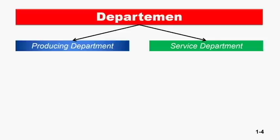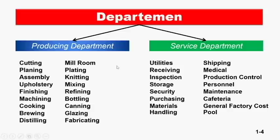Secara prinsip, dalam sebuah pabrik yang dibagi segmen-segmen dalam bentuk departemen, secara umum ada dua jenis: yaitu producing department (departemen produksi). Departemen ini adalah departemen yang melakukan aktivitas pabrikasi, pengolahan bahan baku hingga menjadi barang jadi. Contoh nama-nama producing department antara lain: cutting (pemotongan), planning (perataan/serut kayu), assembly (perakitan), upholstery (pelapisan), finishing, machining, dan fabricating.